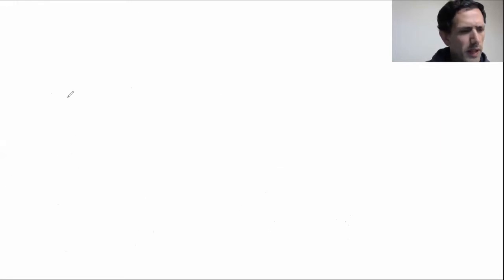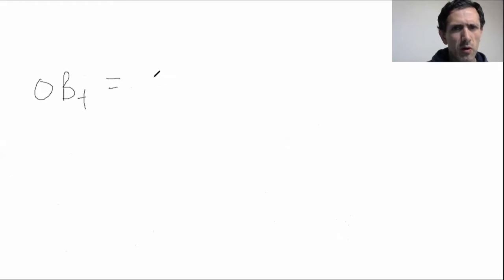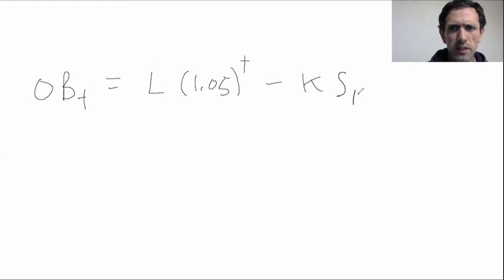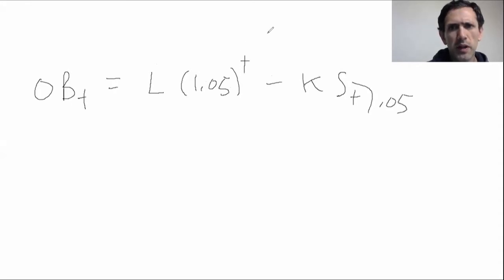Now let's write out what the outstanding balance is. Because we have level payments, we know it's just the loan amount times 1.05 to the T minus K times S-T at 0.05. We know what L is — we just got it a second ago: 15.37K.